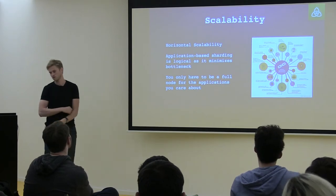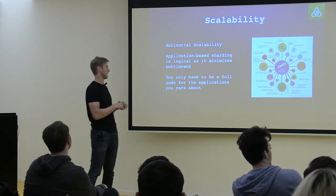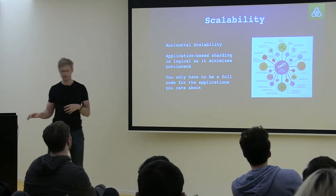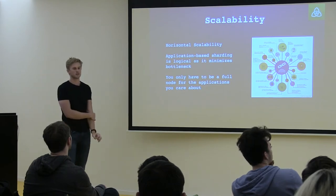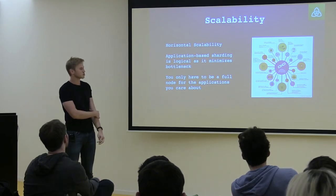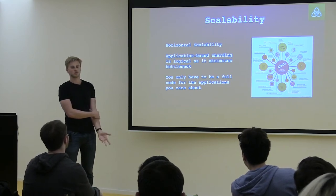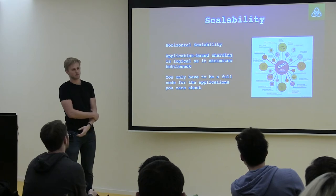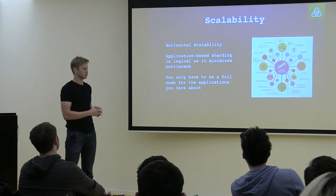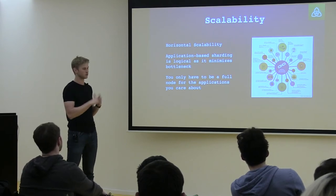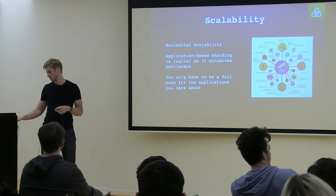Application-based horizontal scaling — you could call it sharding — is very powerful. If you care about a particular application, you just run the node for that chain where that application lives. But in Ethereum today, if you care about Golem for instance, you still have to verify all the other applications you don't care about if you want to run a full node. That makes running a full node very expensive.